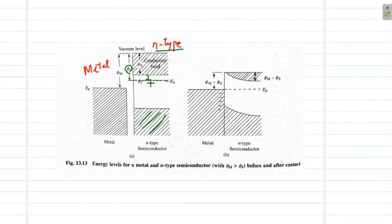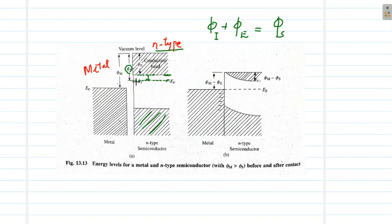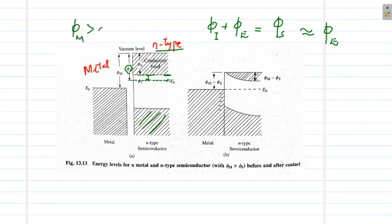We define a small energy difference φ_i as the energy difference between the Fermi level and the bottom of the conduction band, and φ_e as the energy difference from the bottom of the conduction band to the vacuum level. So φ_i plus φ_e equals the total work function φ_s. Since φ_i is very small, we can approximate φ_s ≈ φ_e. As seen in this figure, φ_m is greater than φ_s with an n-type semiconductor, giving a rectifying junction.